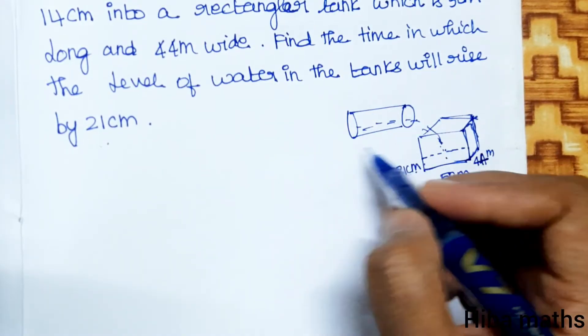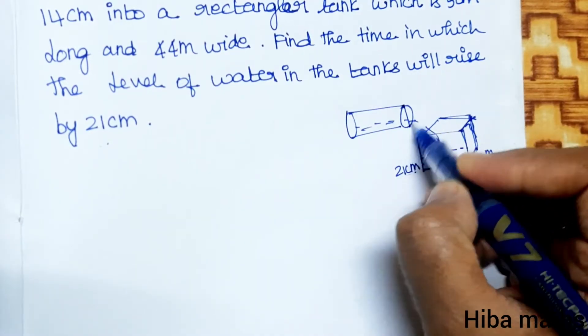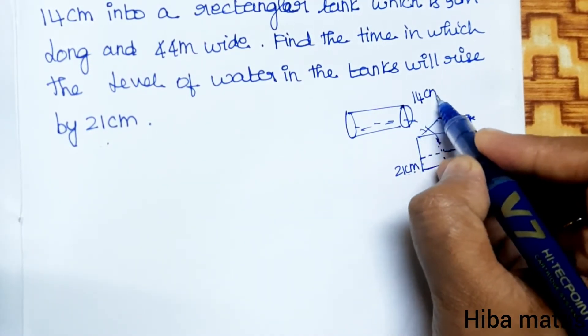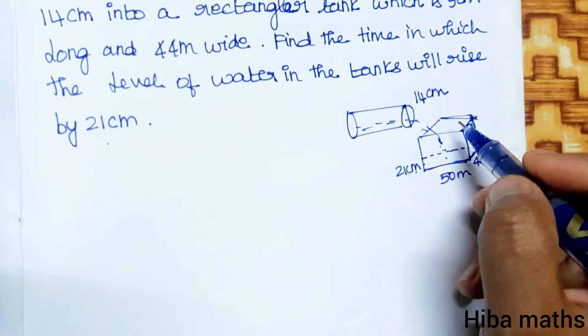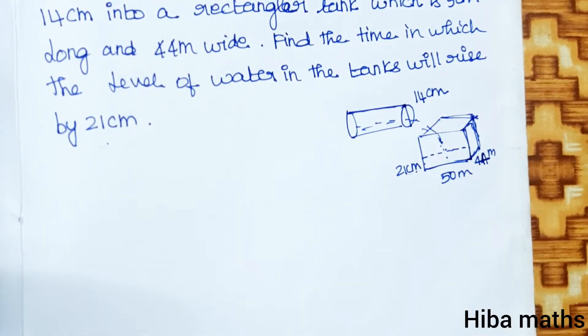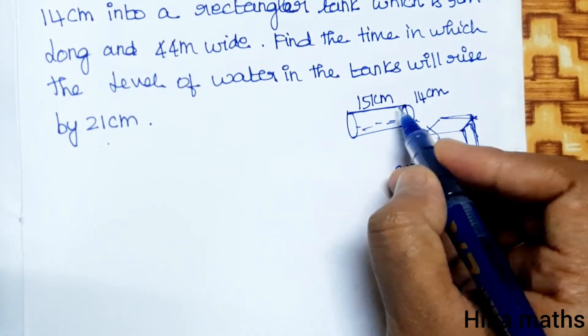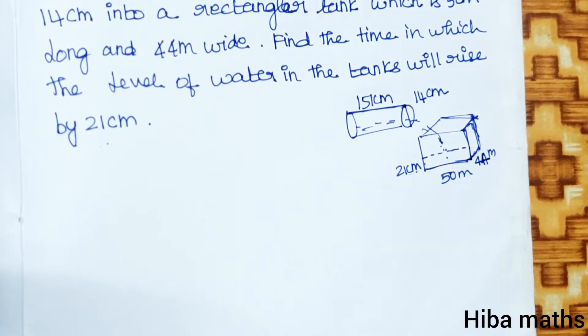This is a cylindrical pipe. Diameter is 14 cm, so we convert to meter. The length: water is flowing at the rate of 15 km, so this is a length of 15 km. We need to convert to meter. Unit conversion is very important.